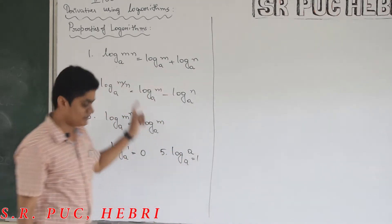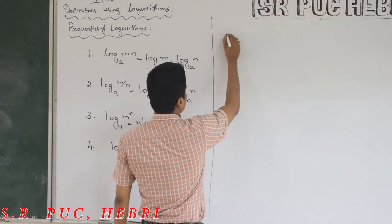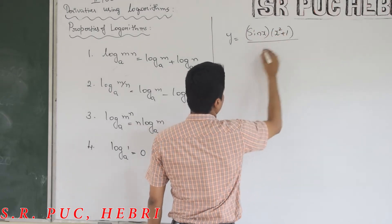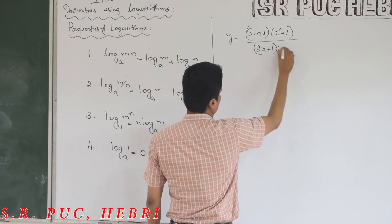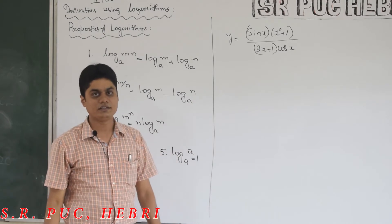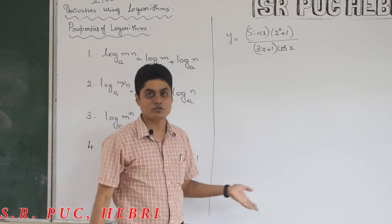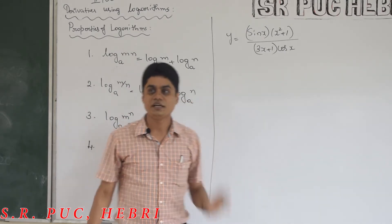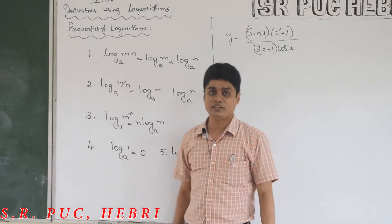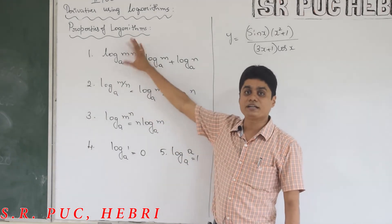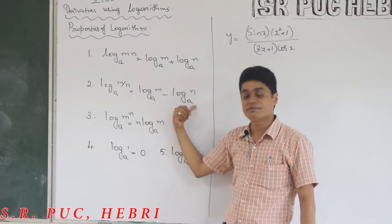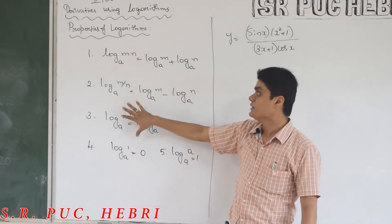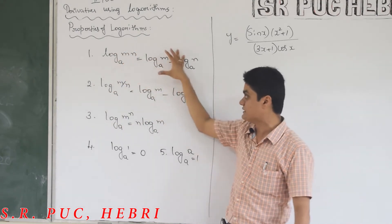I will take one example — no other theory, only five formulas to remember. Suppose you want to differentiate y = sin(x)·(x²+1) / (3x+1)·cos(x). If you differentiate this directly, quotient rule is required and product rule is required two times — direct differentiation is seriously very lengthy. But with logarithms it becomes very simple. The first property converts product into addition, the second converts division into difference, and the third converts an exponential into a product — difficult parts become easy.